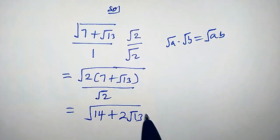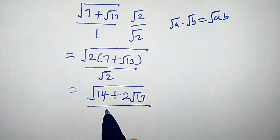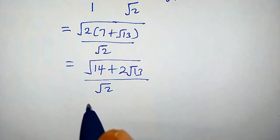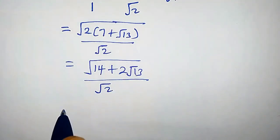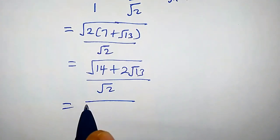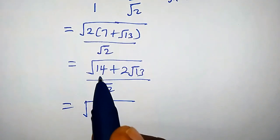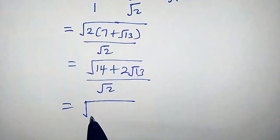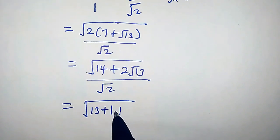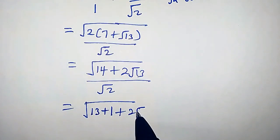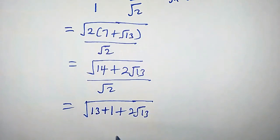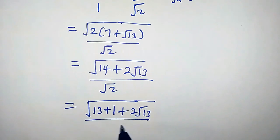Now let's consider this numerator. We're going to write √14 as √(13 + 1), plus 2 times √13, all over √2.